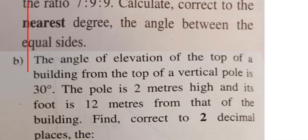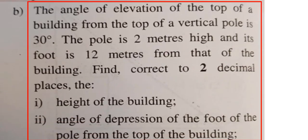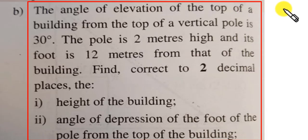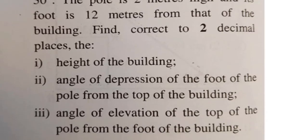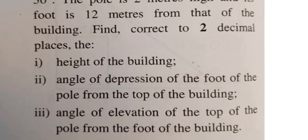Part 7b says that the angle of elevation of the top of a building from the top of a vertical pole is 30 degrees. The pole is 2 meters high and its foot is 12 meters from that of the building. Find correct to two decimal places: I - the height of the building; II - the angle of depression of the foot of the pole from the top of the building; III - the angle of elevation of the top of the pole from the foot of the building.